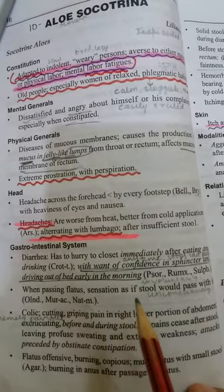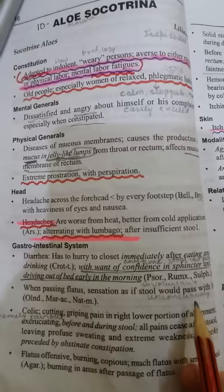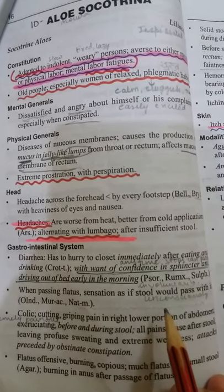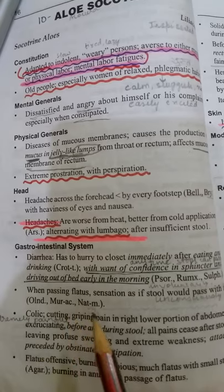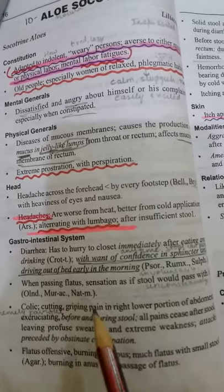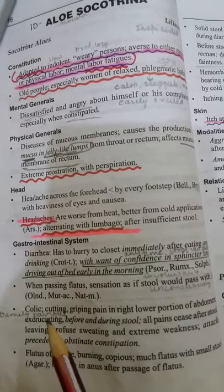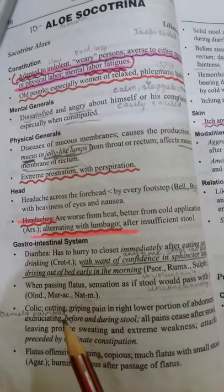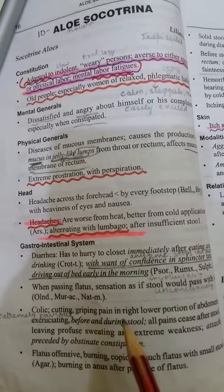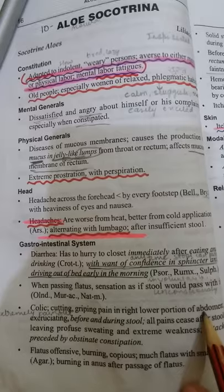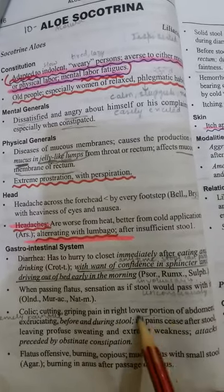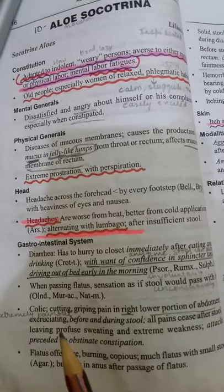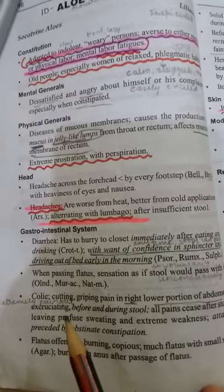When passing flatus, there is a sensation as if stool would also pass with it — unconsciously and involuntarily. यह Oleander, Muriatic Acid, और Natrium में भी है। Colic — cutting, gripping pain in the right lower portion of abdomen — बहुत excruciating (extremely painful) pain होता है।